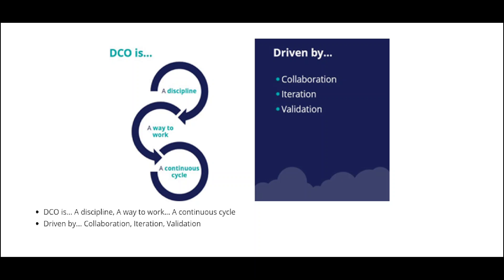Project developer lead, scrum master, product owner, LSA, and dev team — everyone listens actively to what is developed in the sprint. They give feedback in the early stages so that the dev team can incorporate those changes in the next sprint, depending on the priority. That is what DCO is.